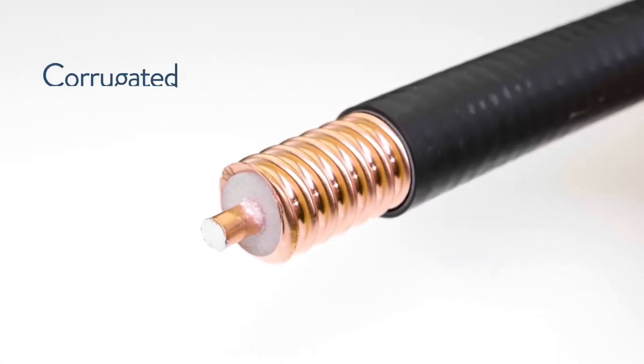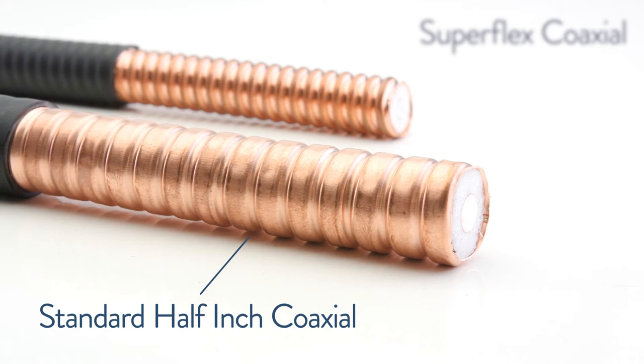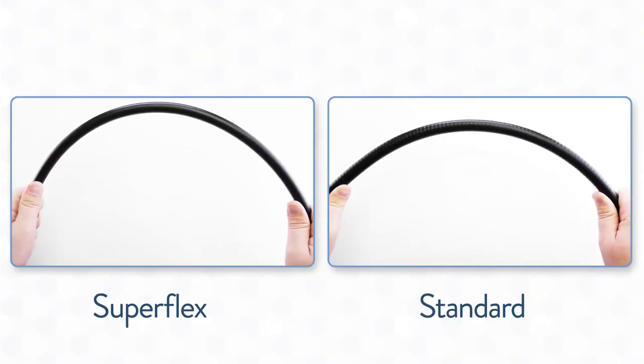Our low-PIM, low-loss cables are made from corrugated copper and come in the standard coaxial or superflex for situations where you need more flexibility.